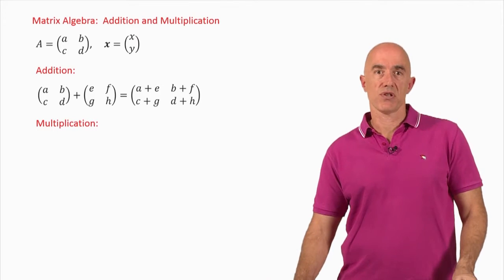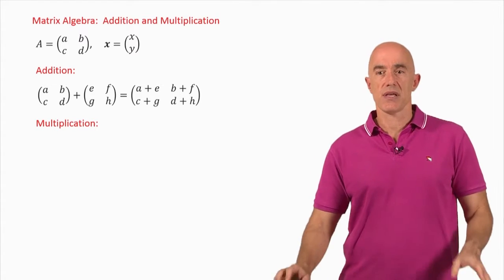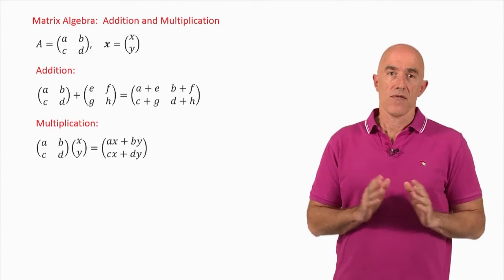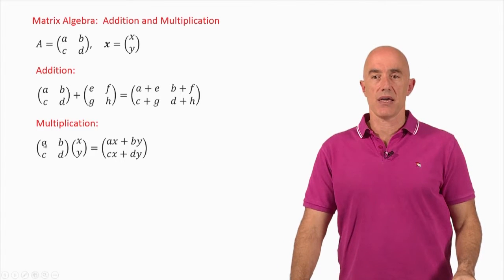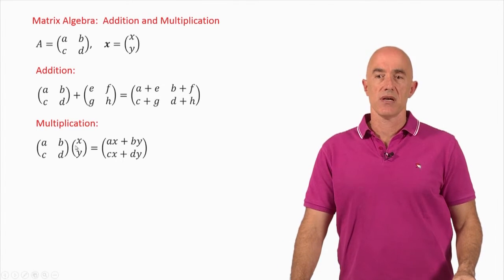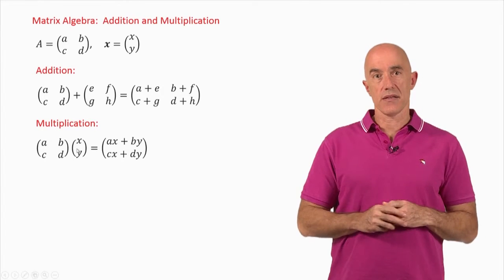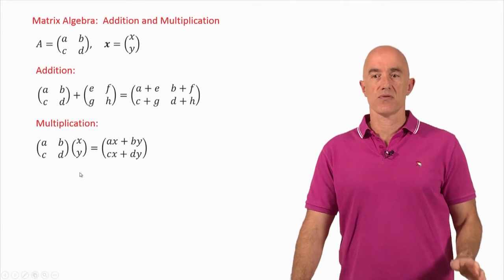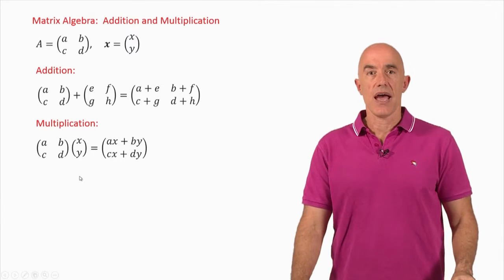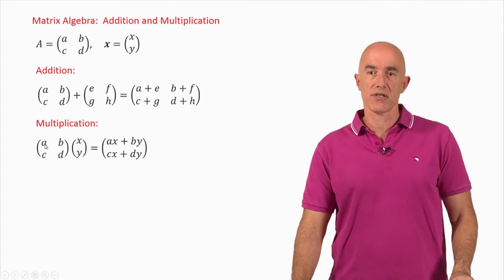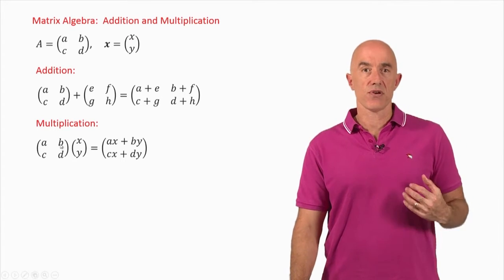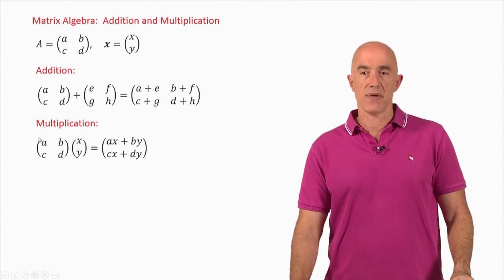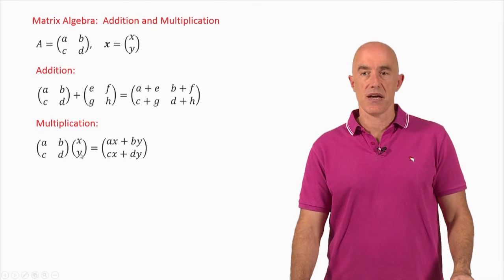What about matrix multiplication? Matrix multiplication is a little bit more complicated, but not that difficult. For the 2 by 2 case, we can multiply a 2 by 2 matrix times a 2 by 1 column vector. The multiplication proceeds by going across the rows of the first matrix and down the column of the second matrix. So the first element here will be A times X plus B times Y.